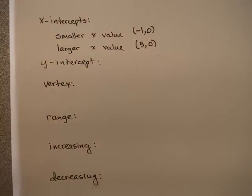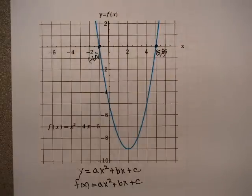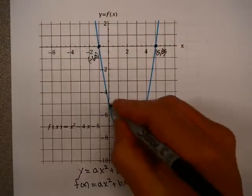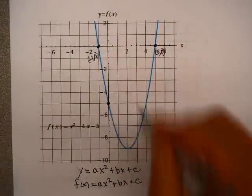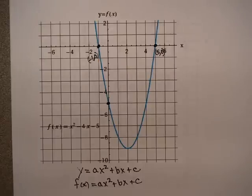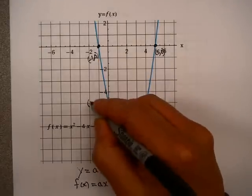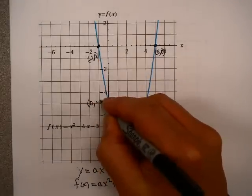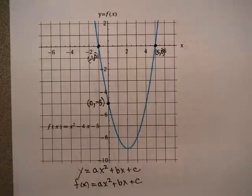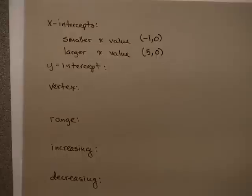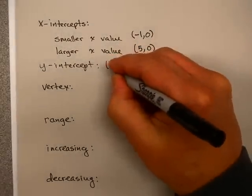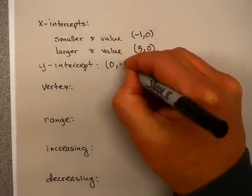The next question is the y-intercept. And again, you should be able to read that off. In this case, this is clearly where it intersects the y-axis. And that ordered pair is x equals 0, y equals minus 5. So in WebAssign, you would enter (0, -5).